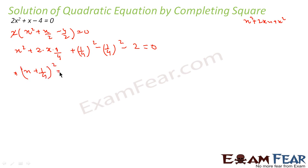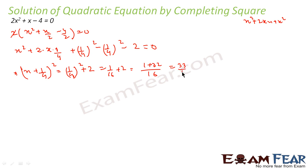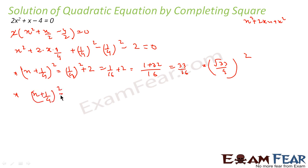This gives (x + 1/4)² = (1/4)² + 2 = 1/16 + 2 = 1/16 + 32/16 = 33/16, which is (√33/4)². So the equation is (x + 1/4)² = (√33/4)².